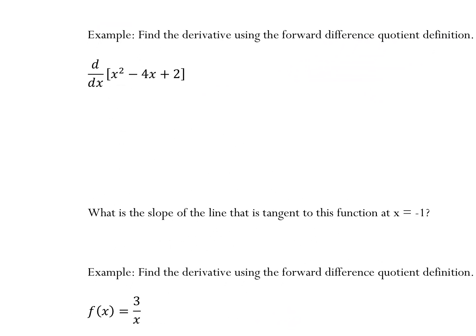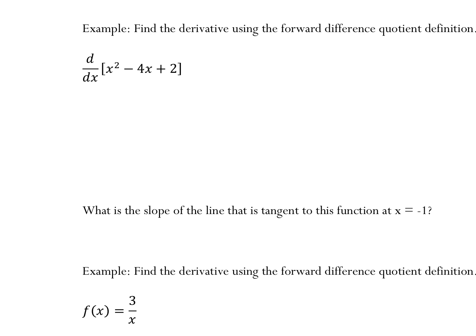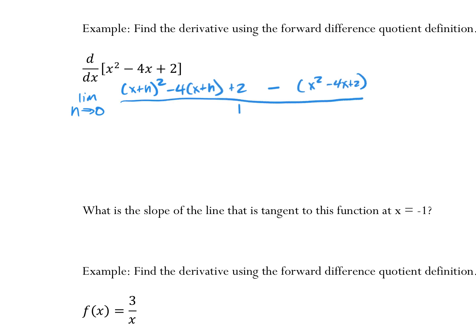Let's look at this one. How many of you know this derivative just looking at it? We're expecting it to be 2x minus 4. I'll have you do the forward difference quotient just once. If I ask you to prove it using the definition of the derivative, my expectation will be: F(x + h) minus F(x), all over h, taking the limit.